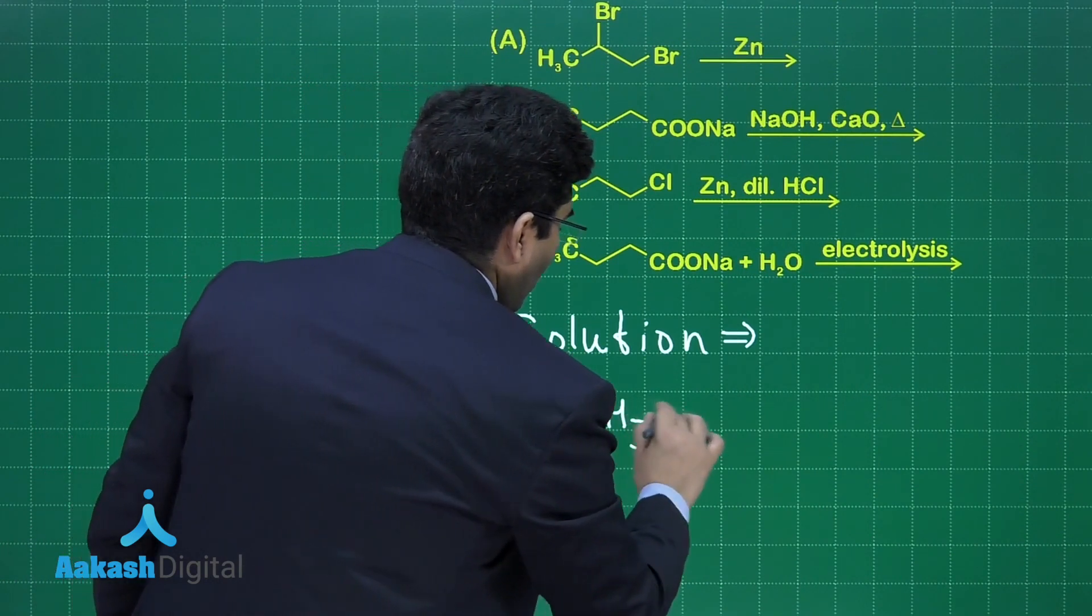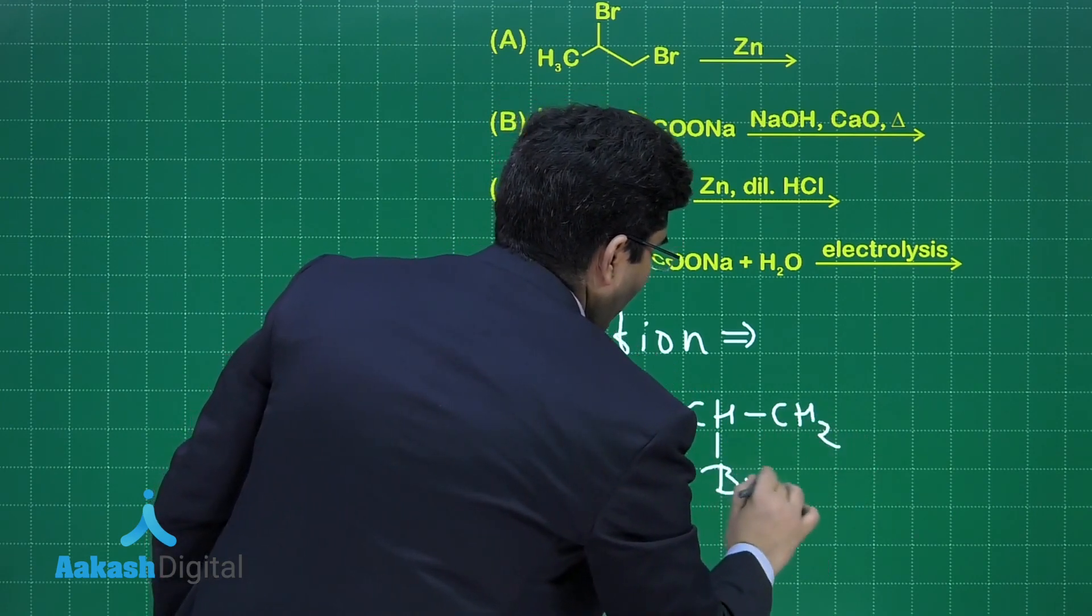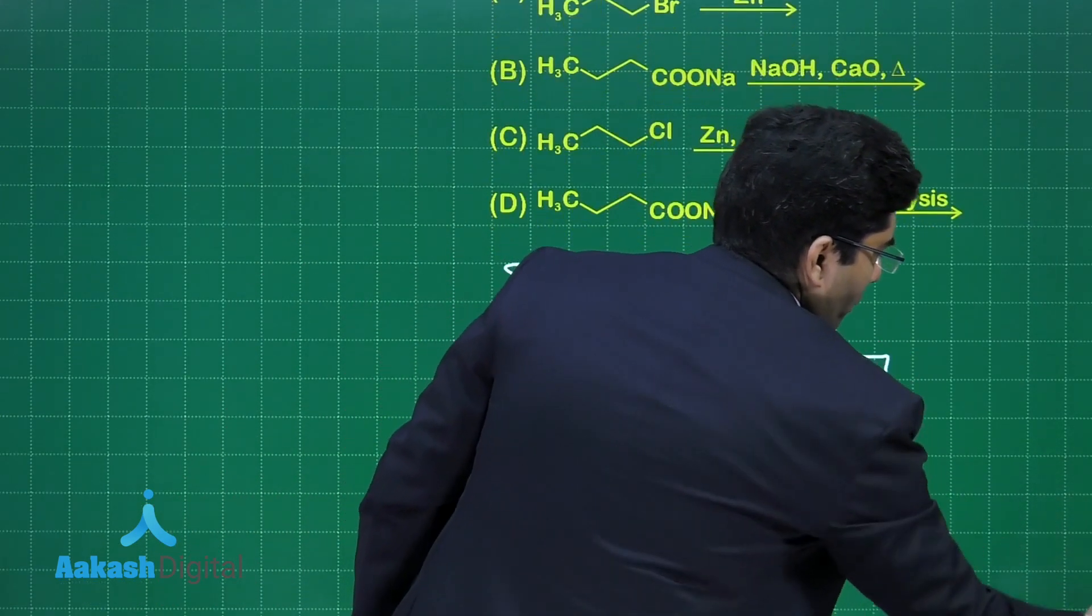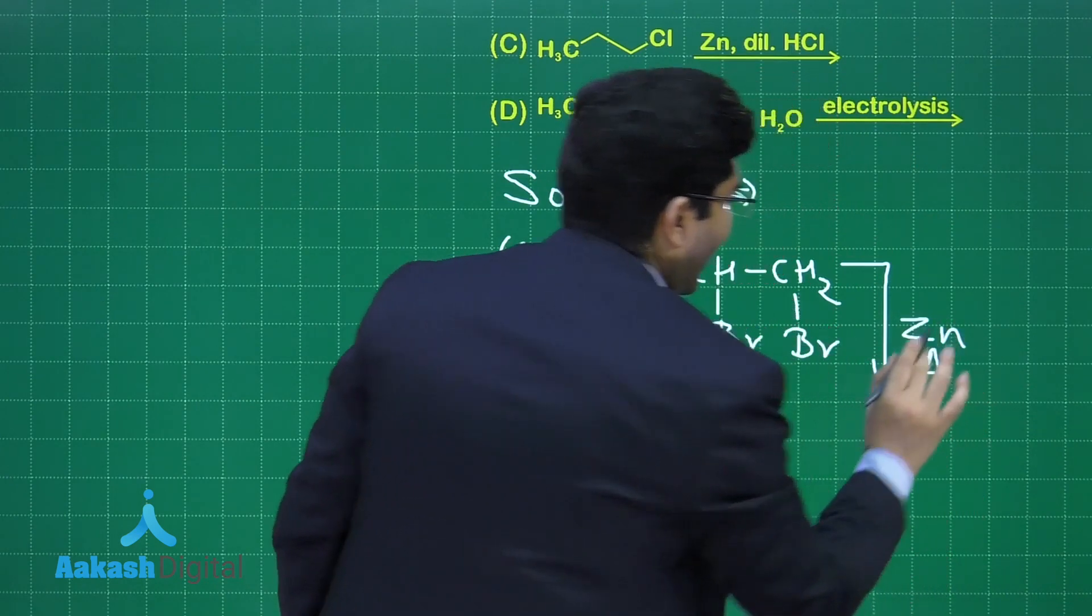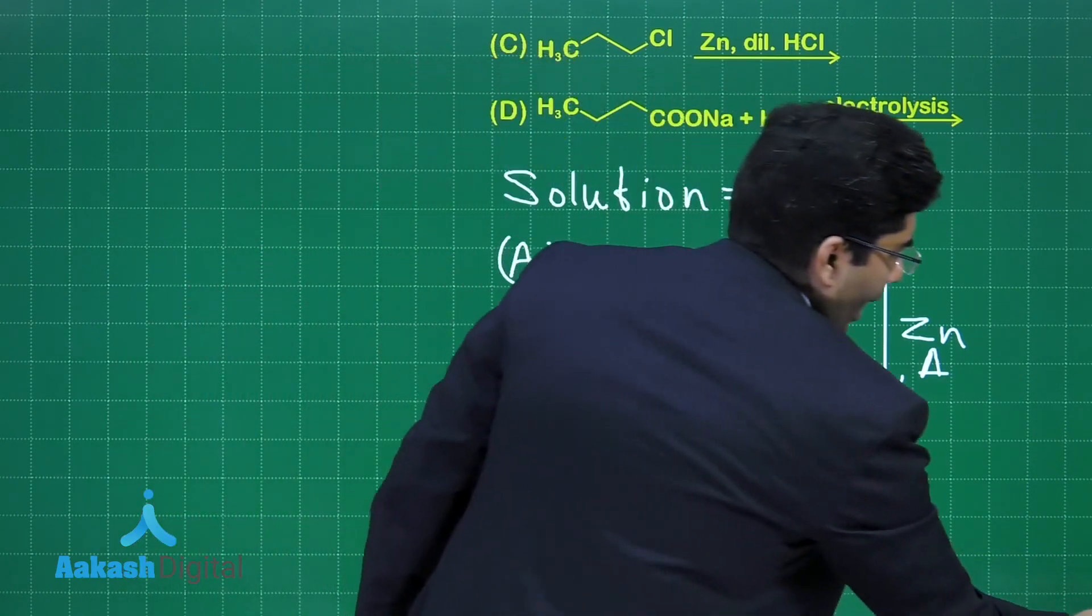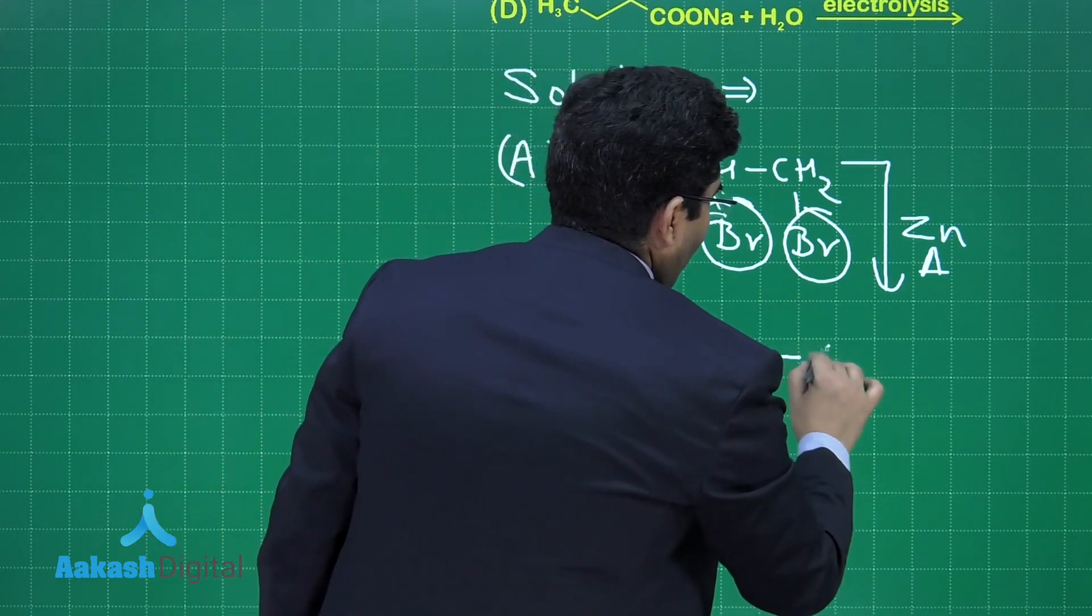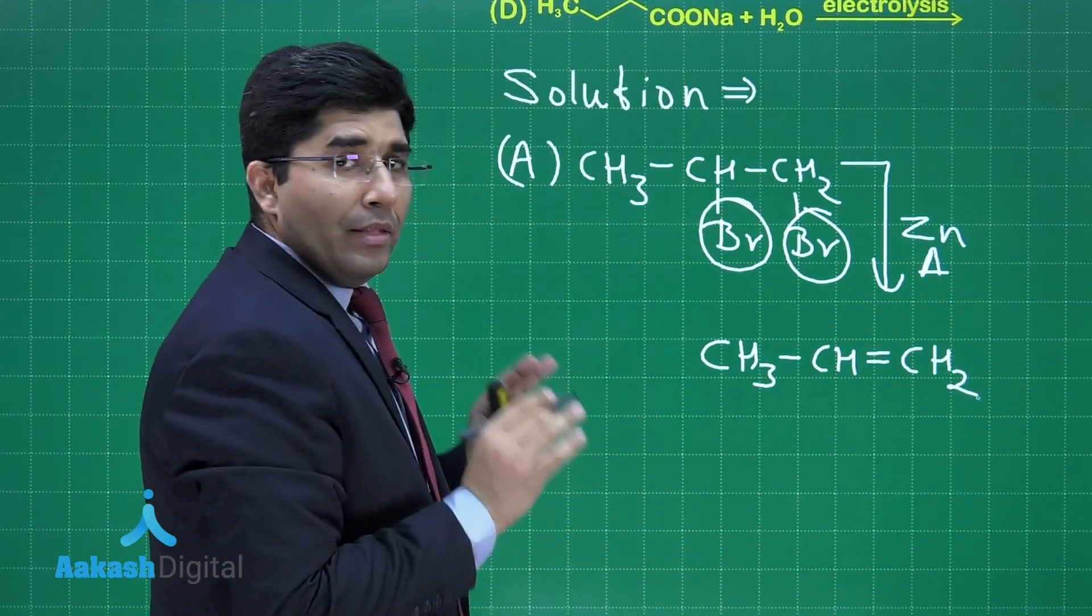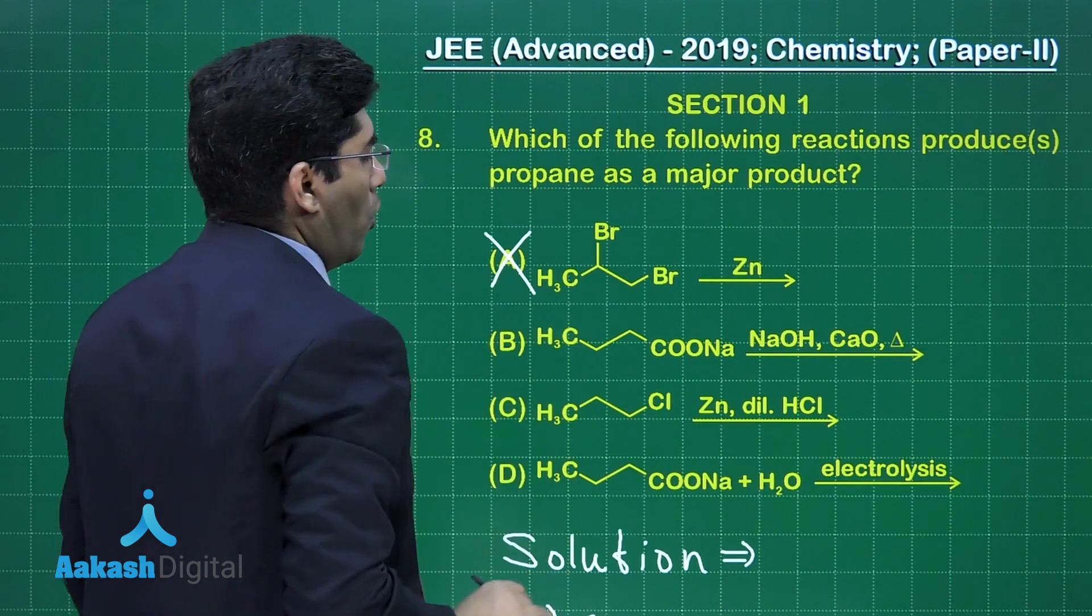CH₃-CH-CH₂ with Br and Br. This is a typical example of beta elimination. This is reacting with zinc and we are heating it with zinc. Zinc will take away these two bromine atoms and we will get CH₃-CH=CH₂. Now this is not propane, this is propene. That is why it is not our answer and this is the wrong option.